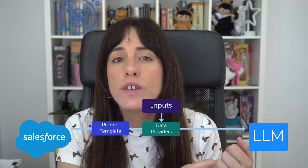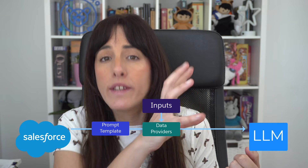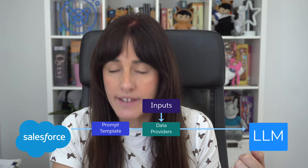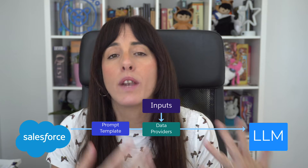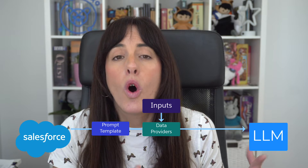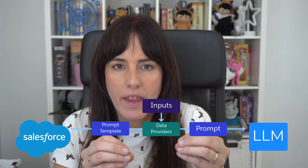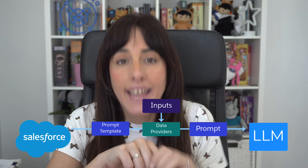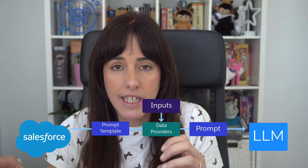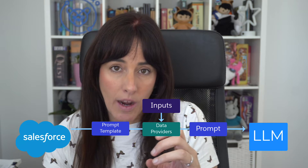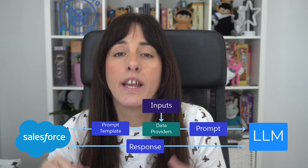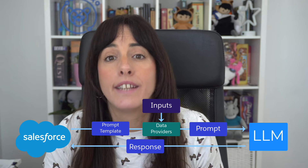When you invoke prompt templates, they are first resolved, which entails retrieving the data from all the data providers in the template, such as merge fields, related lists, flows, or Apex, to create a resolved prompt. Then the prompt is sent through the Einstein Trust Layer to the Large Language Model, so that the model can generate a response.